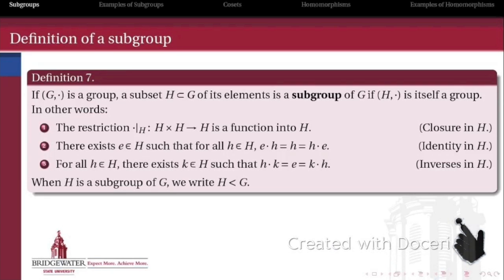What is a subgroup? Naturally, a subgroup is just a smaller group within a larger group. We have some subset of the elements of group G, and the same operation that makes G a group also makes H a group. Keep in mind that the operation on the subgroup H is the same as the operation belonging to the larger group G, and the same is true of all other attributes.